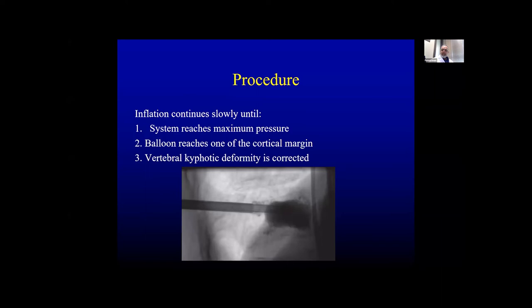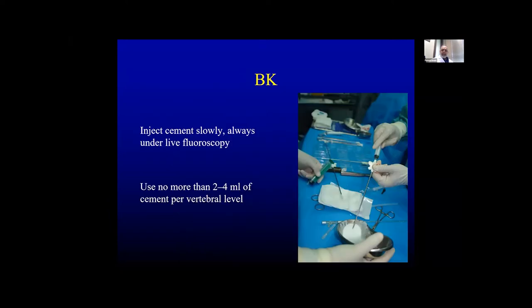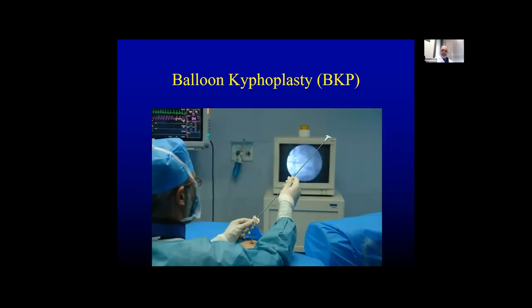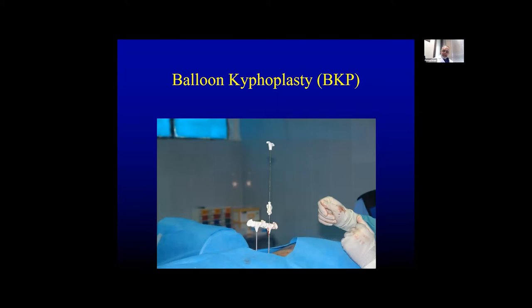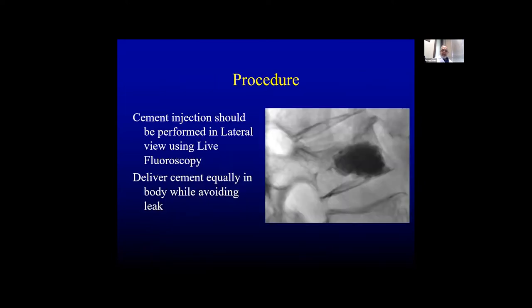Balloon inflation continues slowly until the system reaches maximum pressure, or the balloon reaches one of the cortical margins, or vertebral kyphotic deformity is corrected. After that, the balloon is deflated and cement is injected slowly by bone filler under live fluoroscopy, using no more than two to four milliliters per vertebral level. Cement injection should be performed in the lateral view, delivering cement equally in the body.